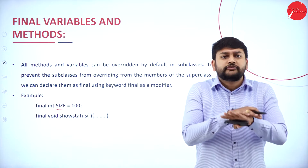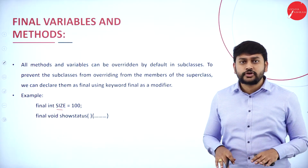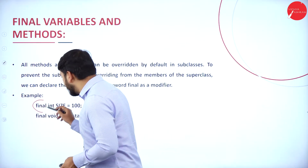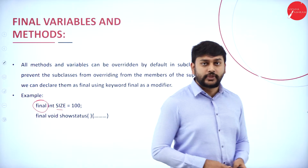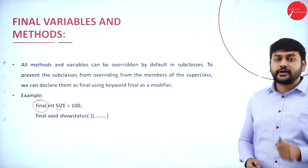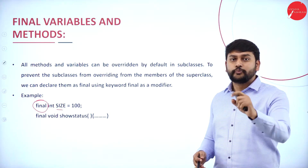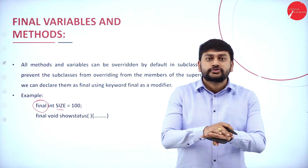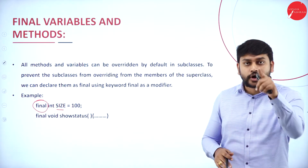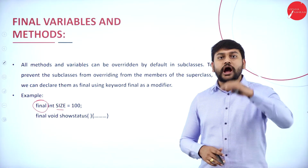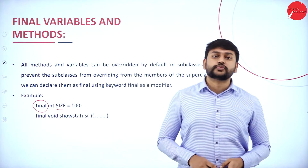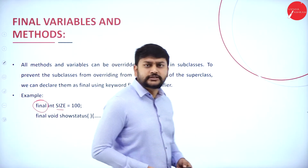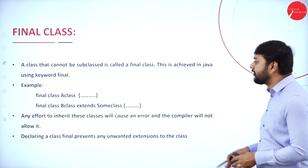But if I don't want the variable value to change and want it to be a fixed value, I have to use a modifier called 'final'. If I use the 'final' modifier before the data type, that variable's value will remain unchanged. After this, you cannot do any modification to that variable — that is what you need to remember.